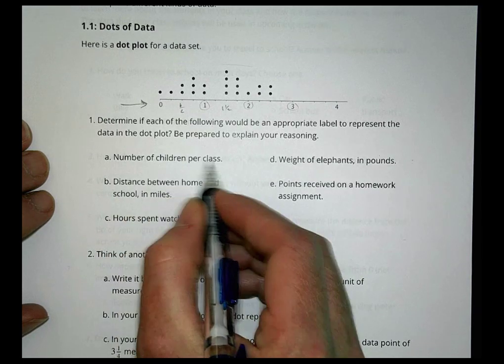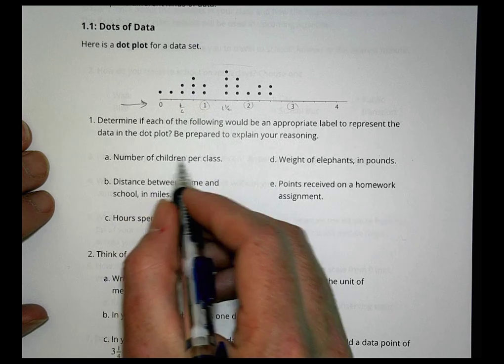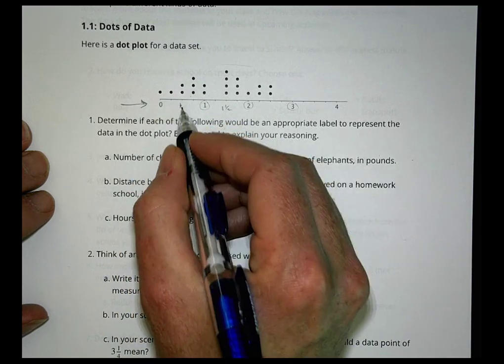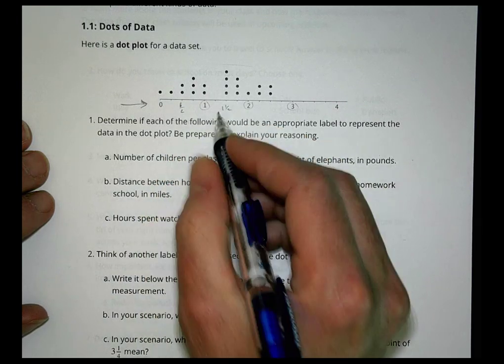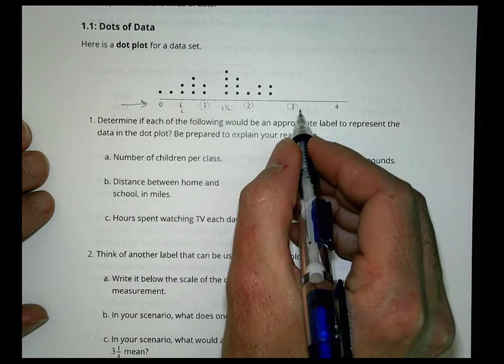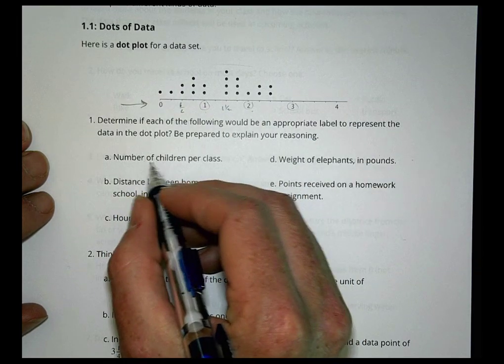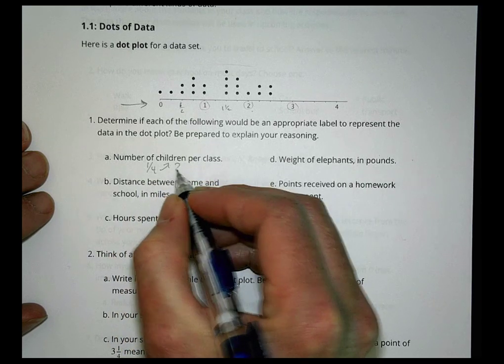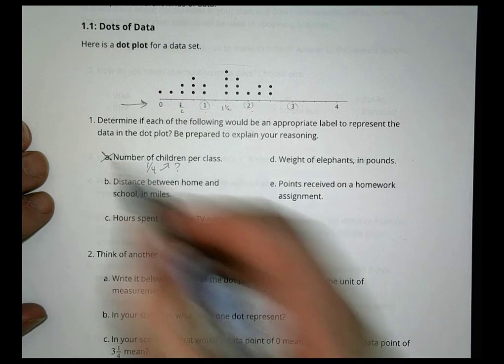Number of children per class. Let's think about this. Would you have zero kids in the class? Can you have half of a kid in a class? Not really. I could see this working if you had whole numbers - 1, 2, 3, and even small numbers for a very small class, but with the fractions, probably not. You can't have one-fourth of a child. That's just not possible. So that would not be a good label for this graph here at all.